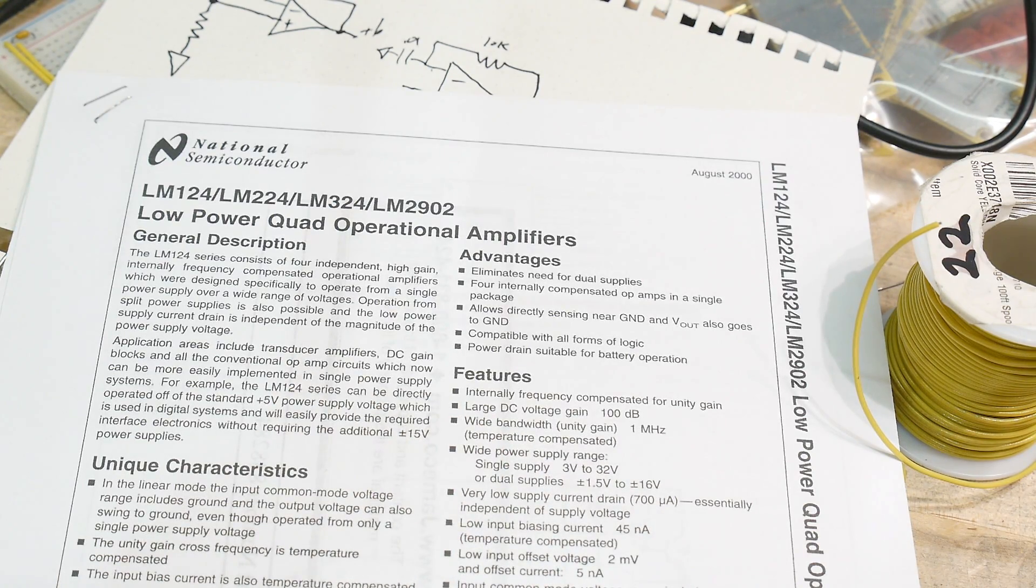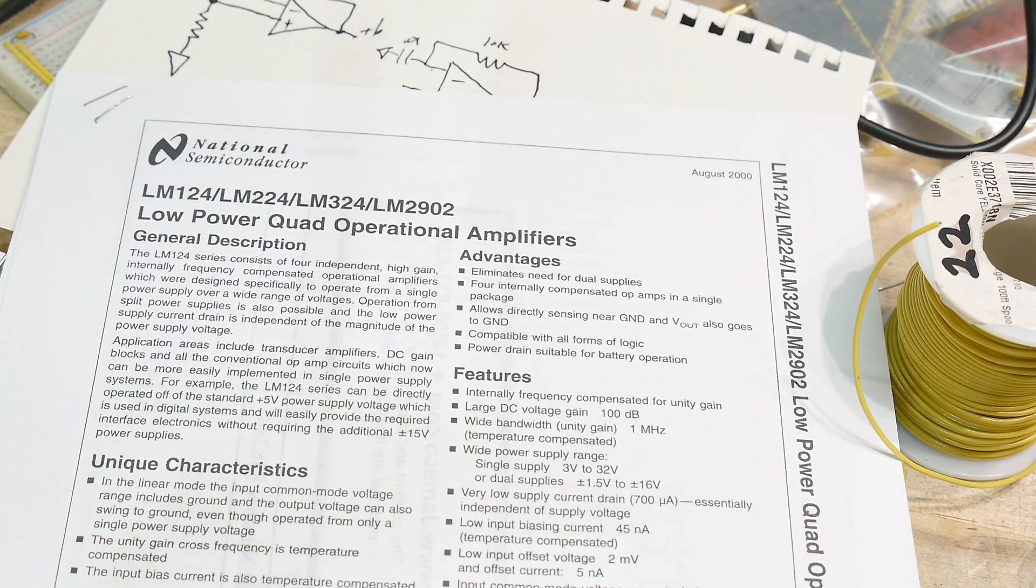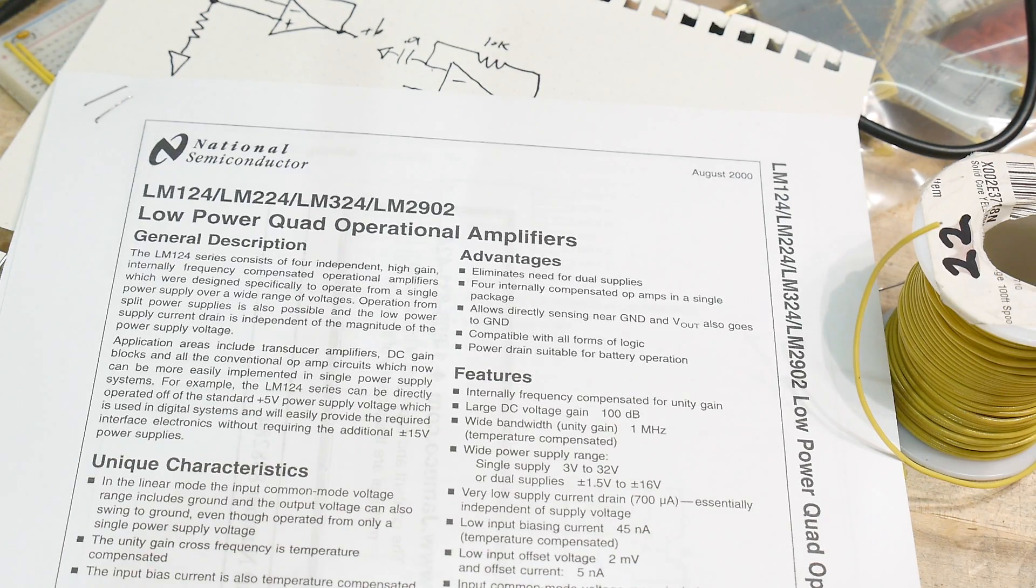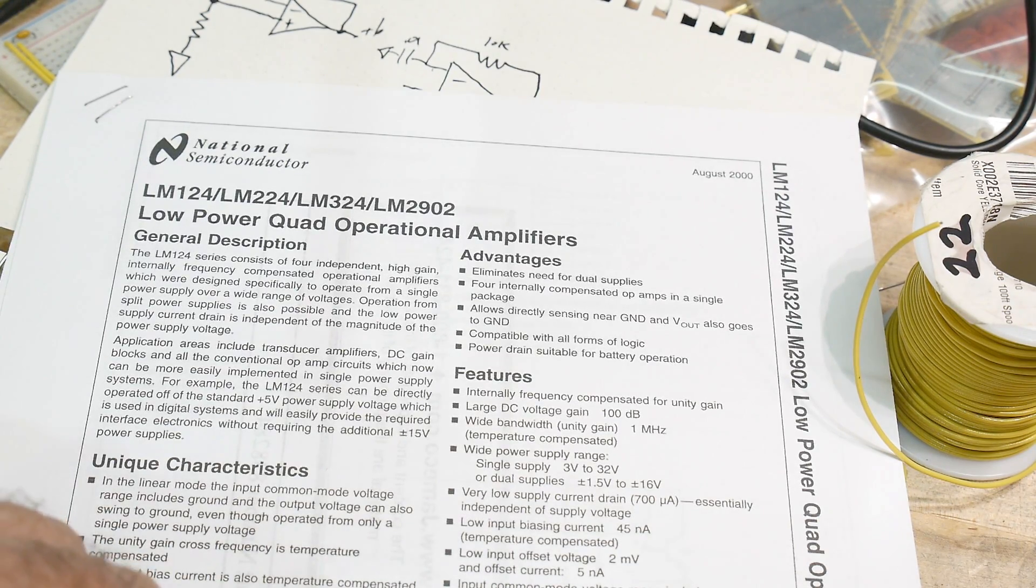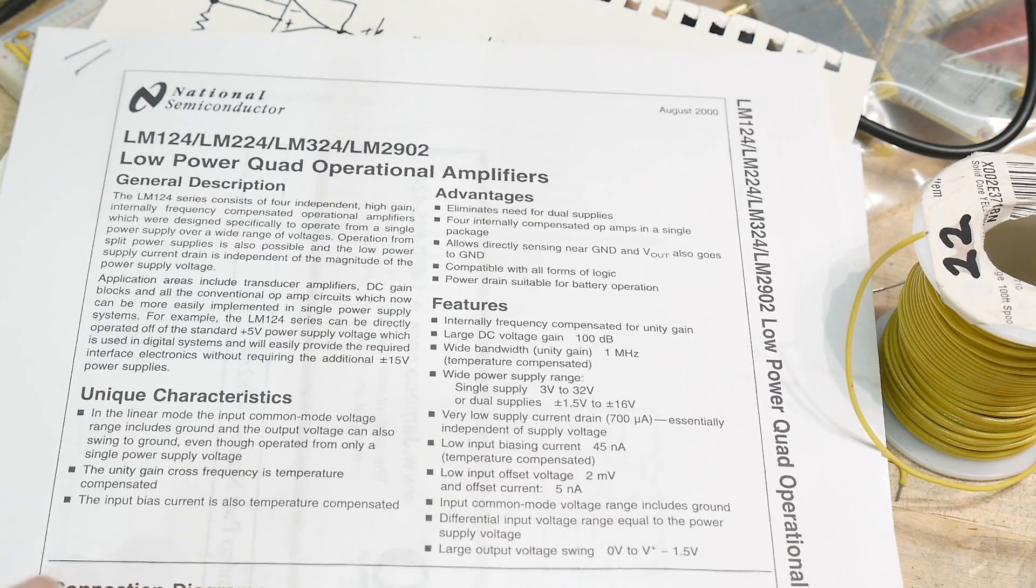One of the nice things about the LM324 is it can operate on a single supply, so ground plus a positive voltage. It can operate at very low voltages - they can operate at 3 volts, so they're very popular in 5 volt systems. You can run it between ground and 5 volts and have op amp operation.